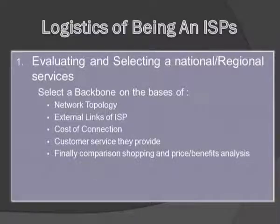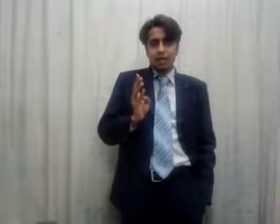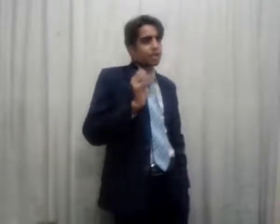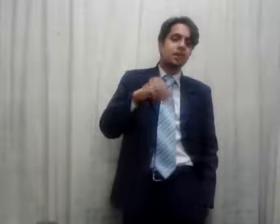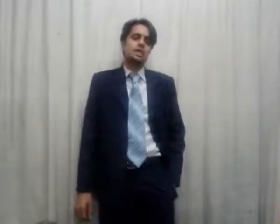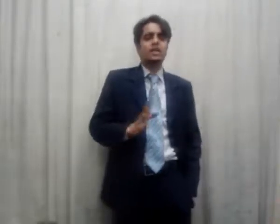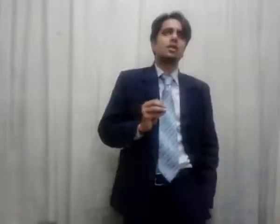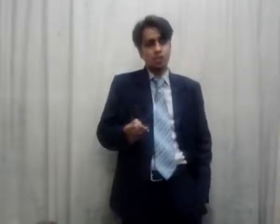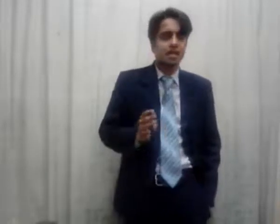Let's discuss the first step: selecting a backbone, meaning selecting a regional ISP. It is based on the bandwidth they provide, the external links in the ISP, the cost of the connection, the customer service they provide, and finally a cost-benefit analysis to check whether this ISP is good for us in terms of cost. The second step is creating infrastructure — setting up a local technology infrastructure — which involves selecting a router, selecting host protocols, terminal ports, terminal sessions, terminal connections, and setting up a modem.